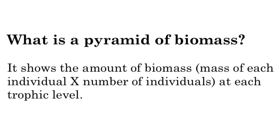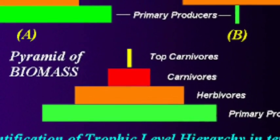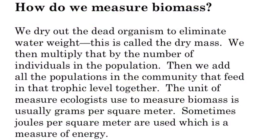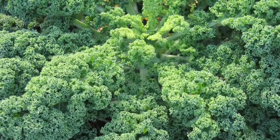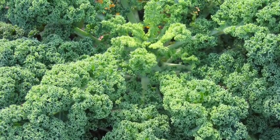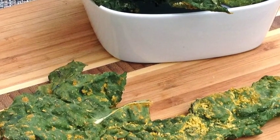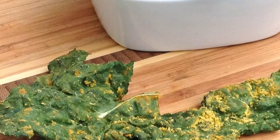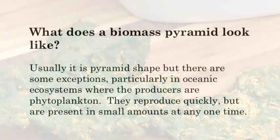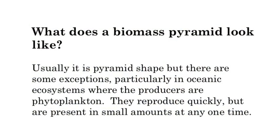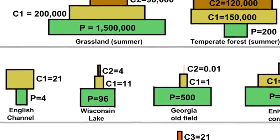A pyramid of biomass shows how much mass is at each trophic level — how much mass of autotrophs versus how much mass of herbivores. To measure biomass, we dry the organism out: we take something like kale, which has a lot of water, put it in the oven, let it dry, and what's left is the actual cell material without water — that's the mass we use. We add all the biomass up and put it into the appropriate squares.